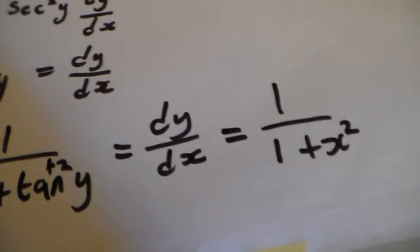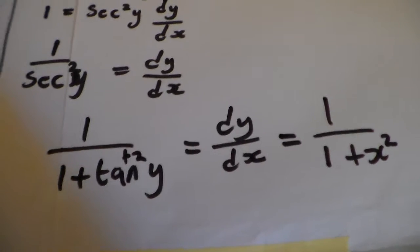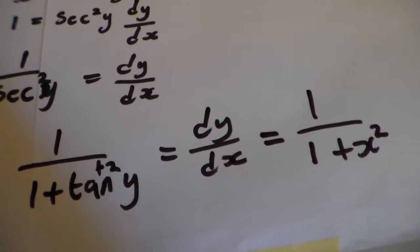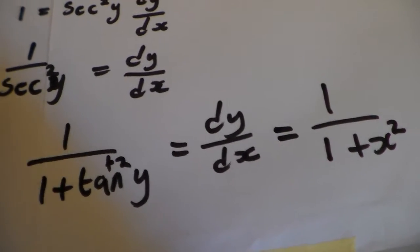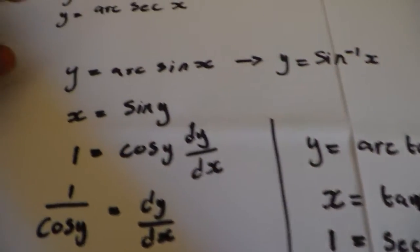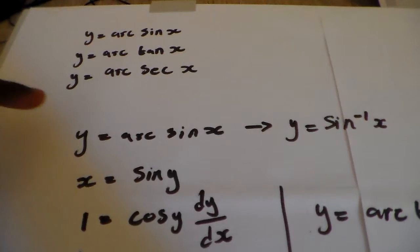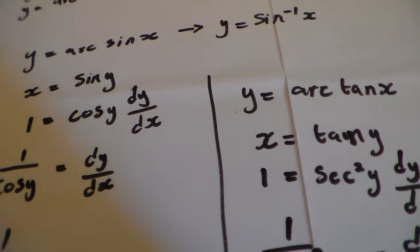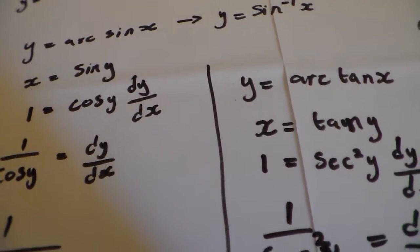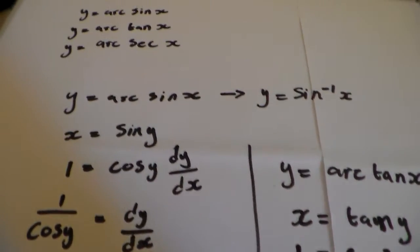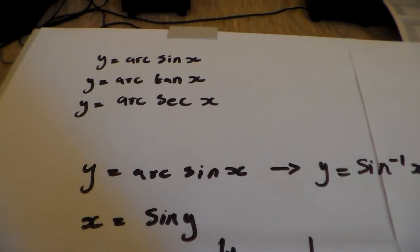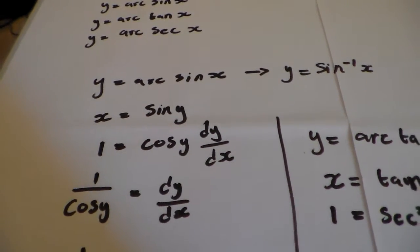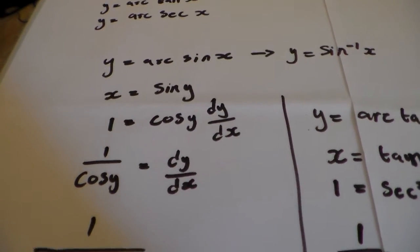So 1 over 1 plus x squared is how we derive the inverse of arctan. We can use the same method when deriving arc cosec and other inverse trig functions. I think you'll find this video useful — remember to like and share.